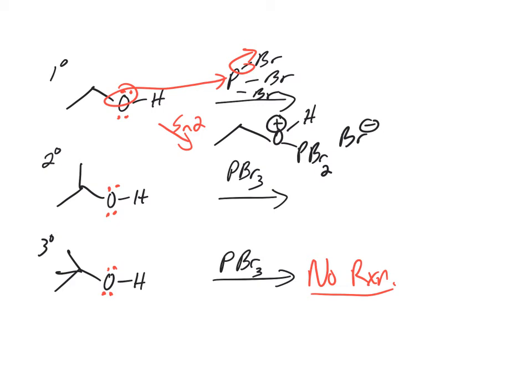So then similar to before, now we've activated the alcohol. Before, we just turned the alcohol essentially into a water leaving group. Now we've turned into this phosphite to react. So this is a good leaving group. There's an oxygen with a plus charge. It's electron deficient. This bond gets weaker. Bromine's a good nucleophile. We're just going to do an SN2 again. And that will get us to our substituted product, OH-PBR2.